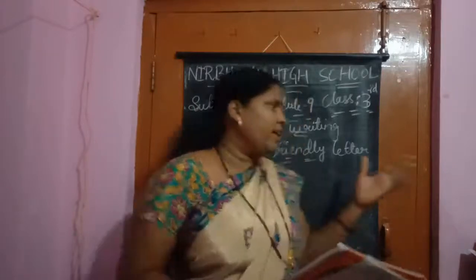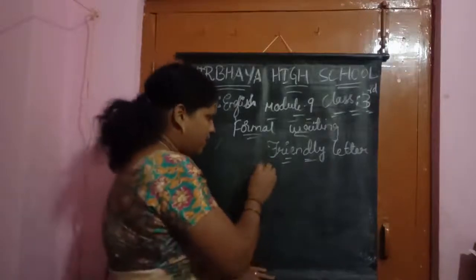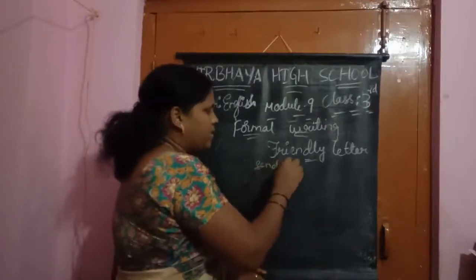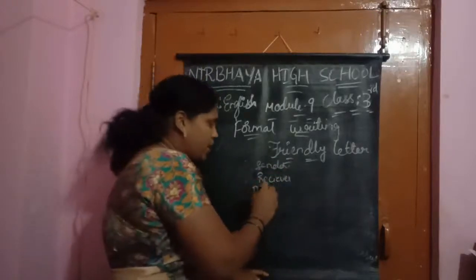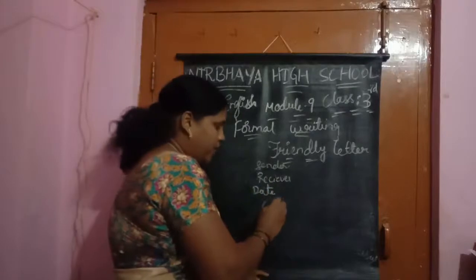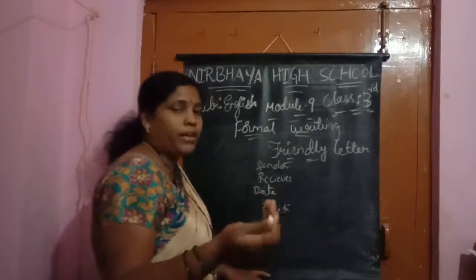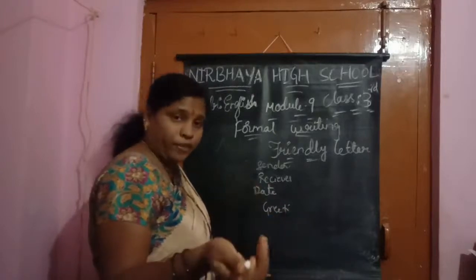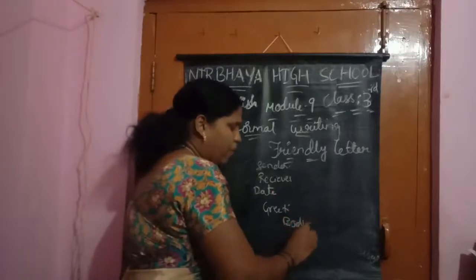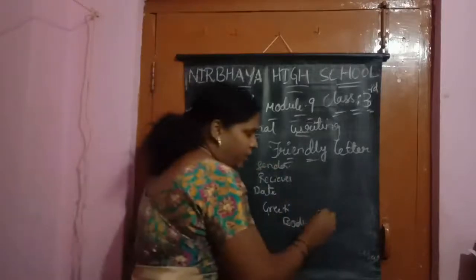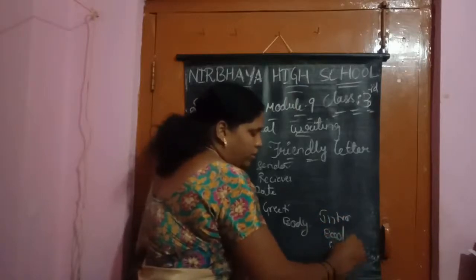Now, how to write a friendly letter. First, you write the sender's address, then the receiver's address. After that comes the date, then the greeting — the salutation — such as 'Dear Friend' or the friend's name. After the greeting comes the body part, which has three sections: introduction, body, and conclusion.